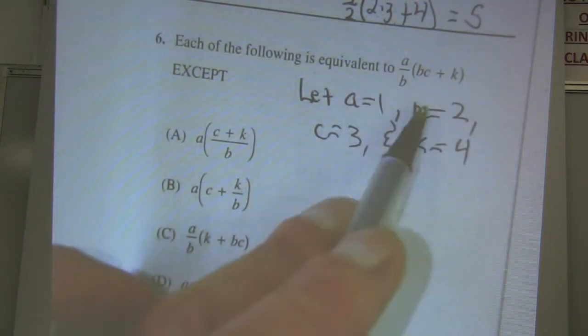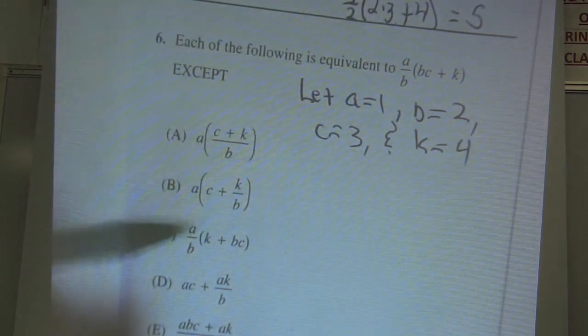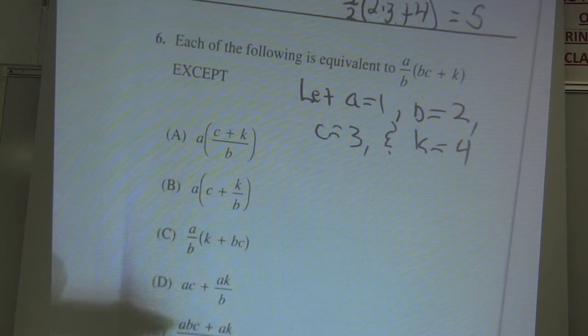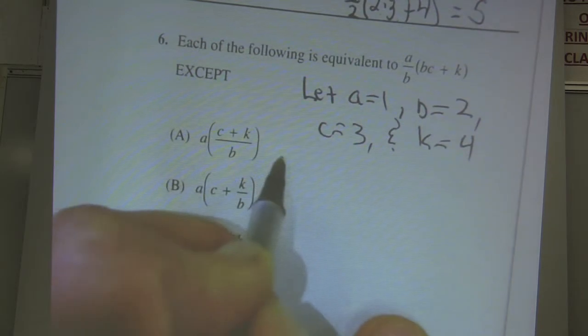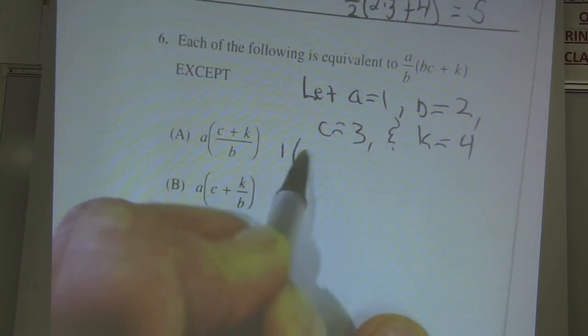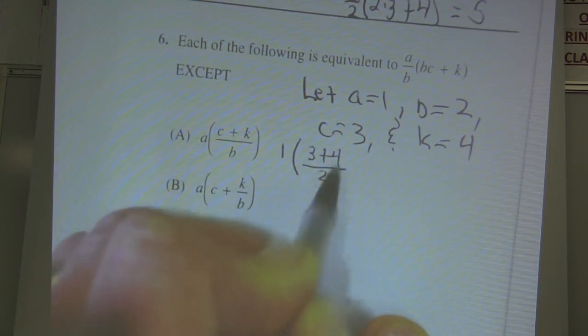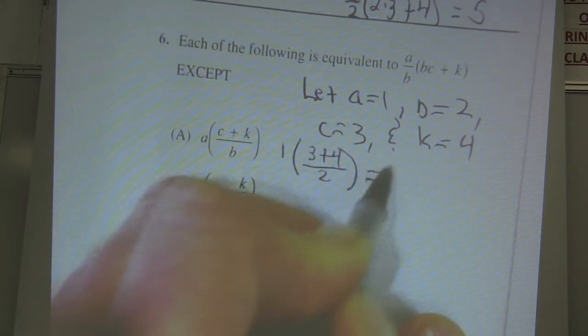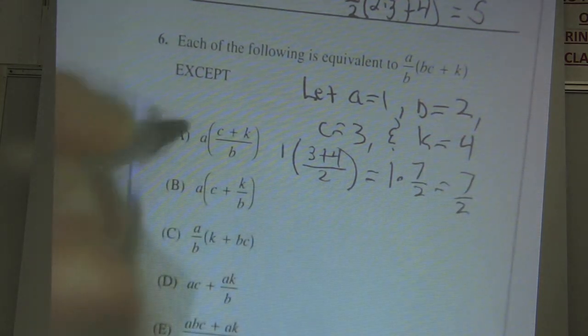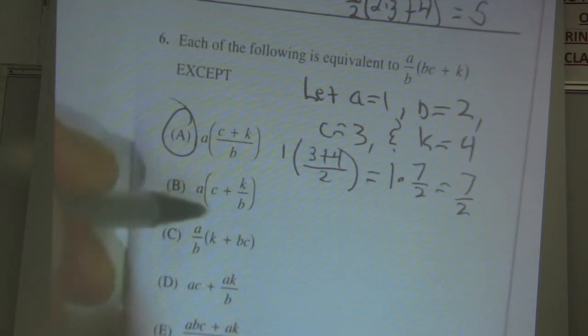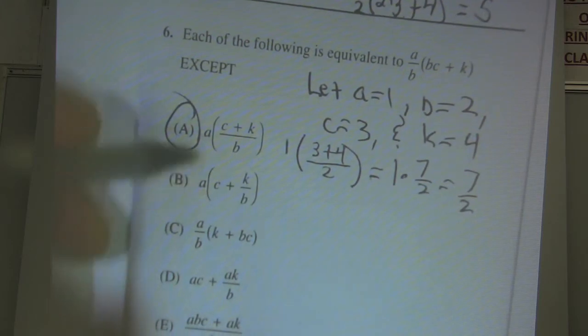So it says each of the following is equivalent to this. So when I plug in the same numbers, I have to get 5. As soon as I don't get 5 on any one of these, that's the one that's not equivalent. So let's try it with choice A. A equals 1, C was 3, K was 4, and B was 2. Look, I get 1 times 7 halves. That's 7 halves. That does not equal 5, so that's the culprit right there. All these other ones, it looks like I would get 5 on that. It's choice A.